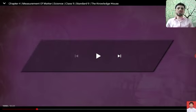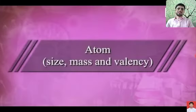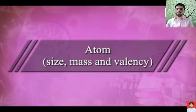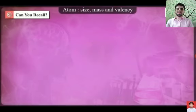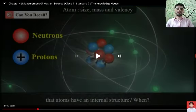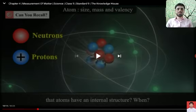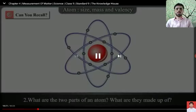Our first question is: from which experiment was it discovered that atoms have an internal structure? An experiment performed by Sir J.J. Thomson in 1887 concluded that atoms have their internal structure.